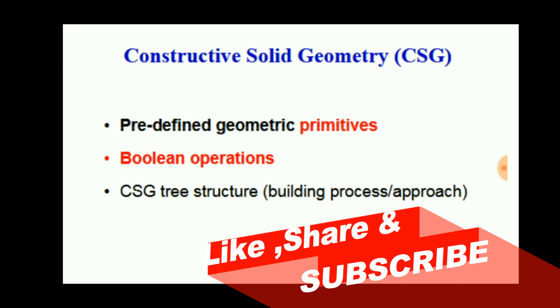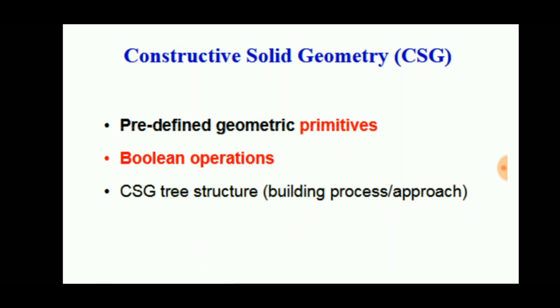What is a primitive? It means the simple basic objects or shapes available in the software that can be used to build the complete product or object. It consists of Boolean operations such as union, intersection, and subtraction.